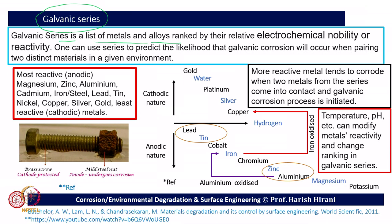The galvanic series is a list of metals or alloys ranked by their relative electrochemical nobility, or the reverse — reactivity. We can rank materials as very reactive or least reactive. If least reactive, it is a noble material; if very reactive, it is an anodic material. The most reactive anodic material is at the top — magnesium, then zinc. If there are two metals, magnesium and zinc, magnesium will be sacrificed as the anodic material and zinc acts as cathodic. However, if we pair zinc and aluminum, aluminum becomes cathodic and zinc becomes anodic. So zinc can act as cathode or anode depending on the relative electrochemical nobility.